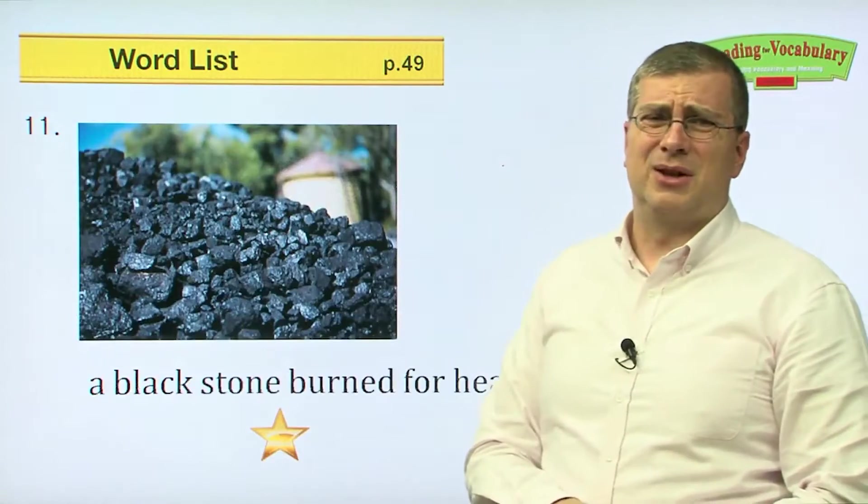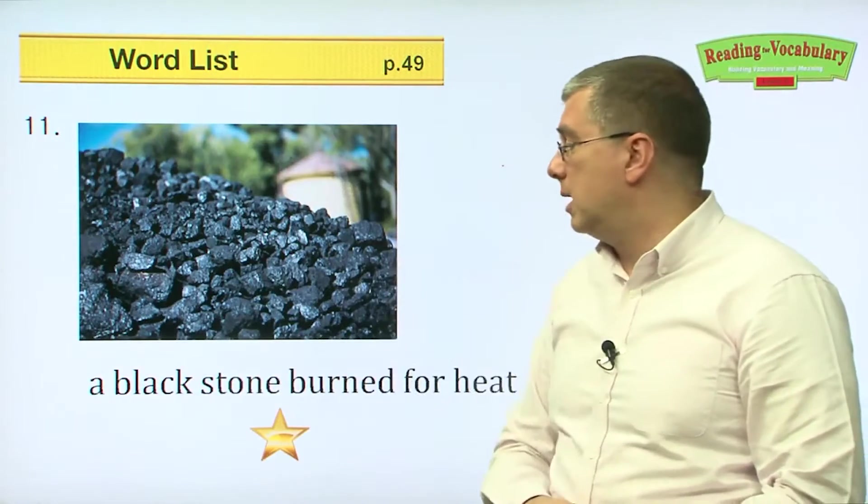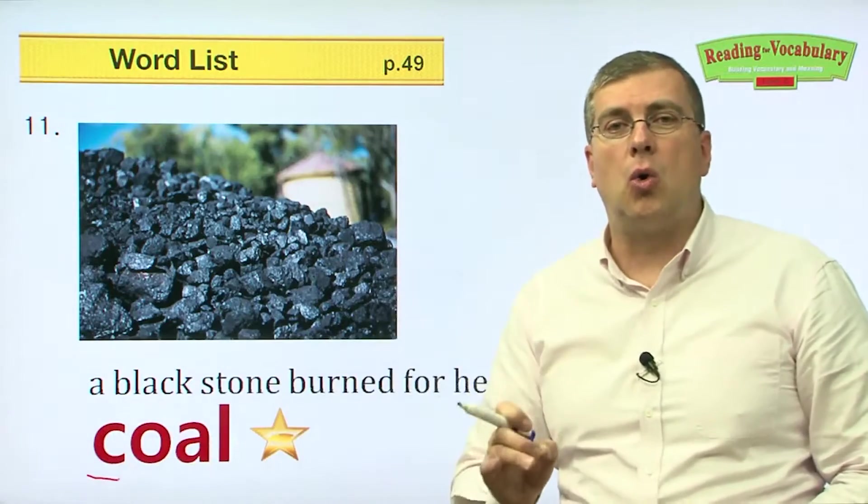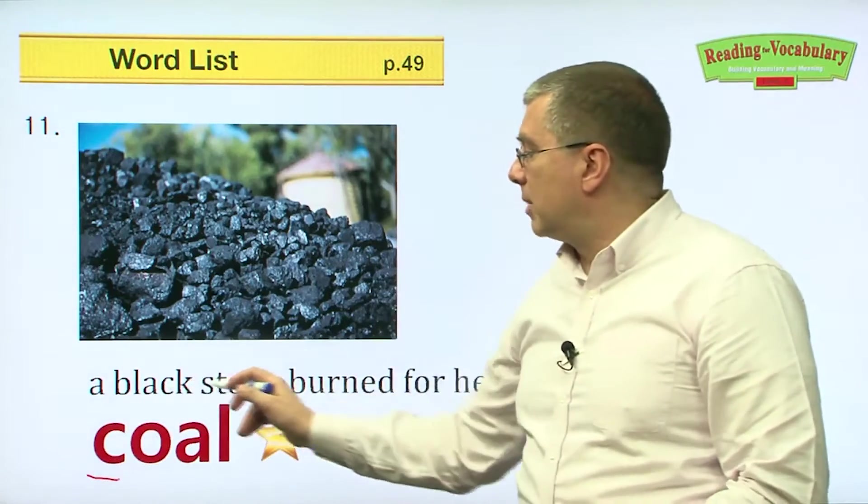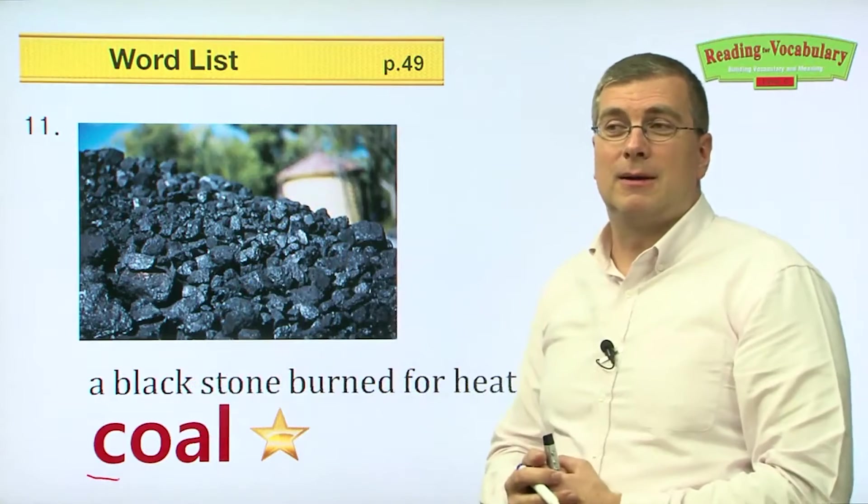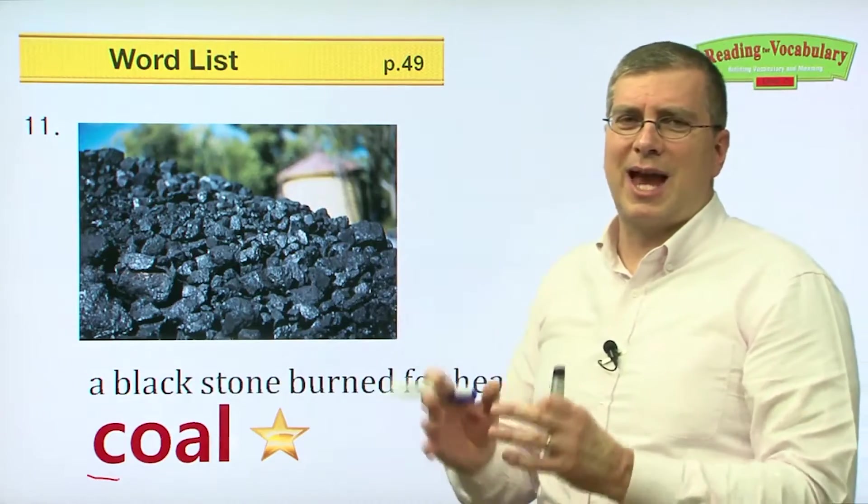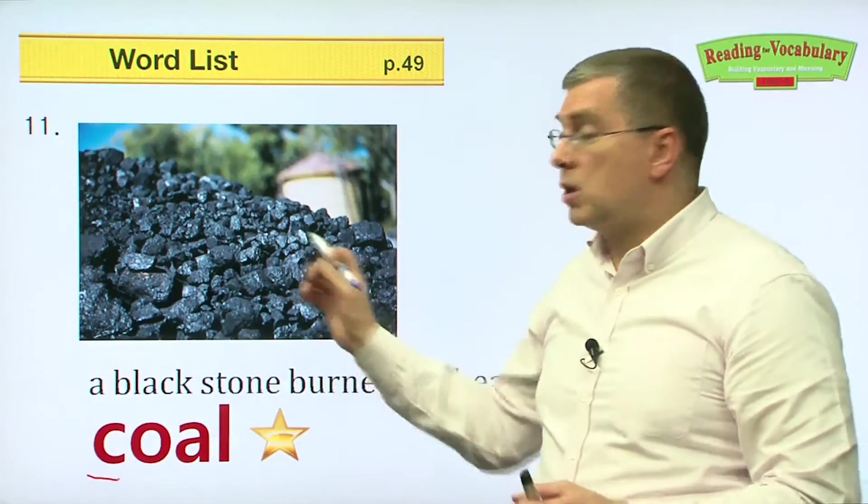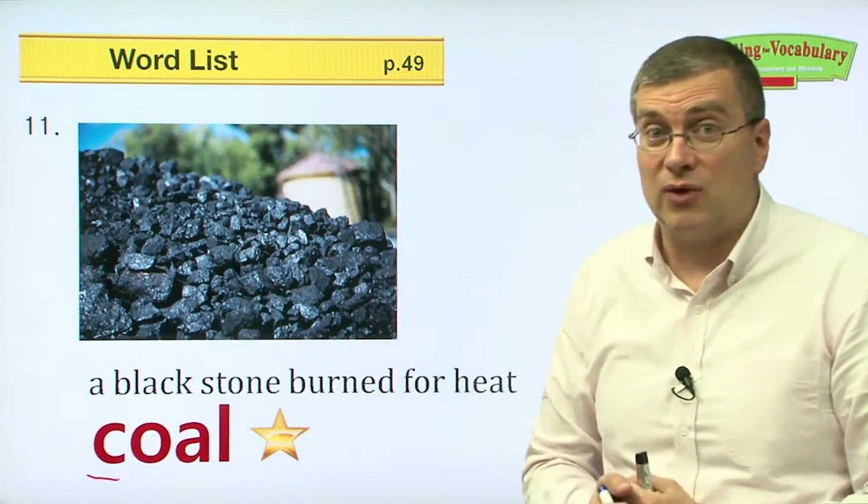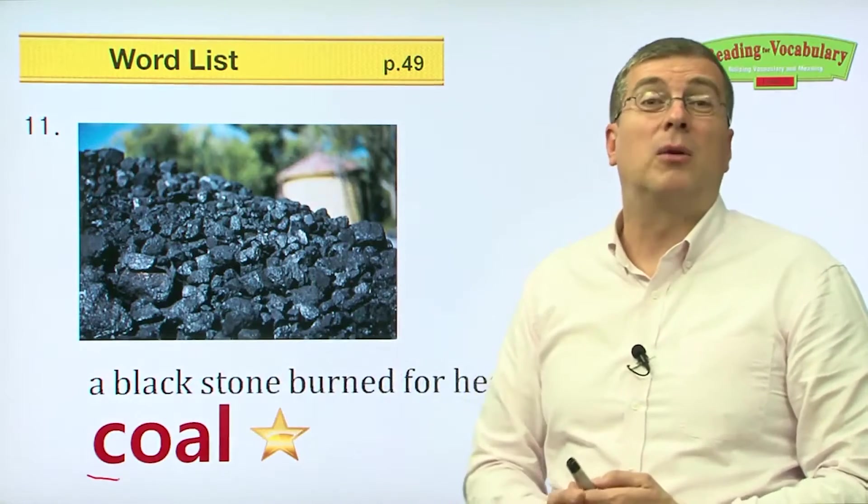Number eleven. What's that? Doesn't look very pretty, but it's very important. A black stone burned for heat. What do we call it? We call it coal. C is a hard K sound. Coal. Coal is a black stone like we see in this picture, and we burn it for heat. If you go to a bulgogi or gogi jeep, some places where they have the outside barbecue, they put coal in the fire underneath and they burn it. That's an example of coal. You can see it every day. Black stone burned for heat is coal. Coal is very important for our modern life.